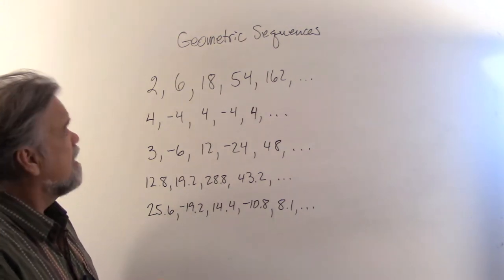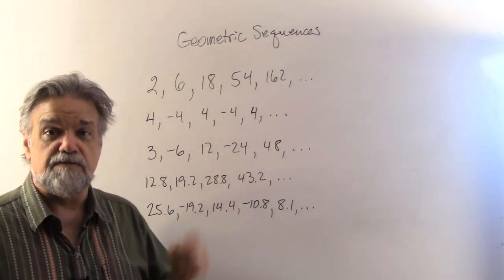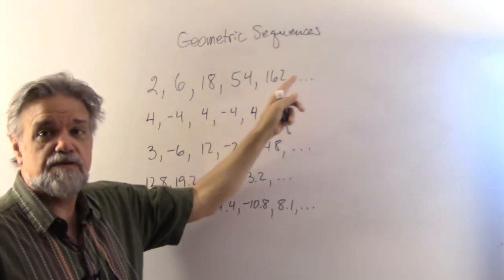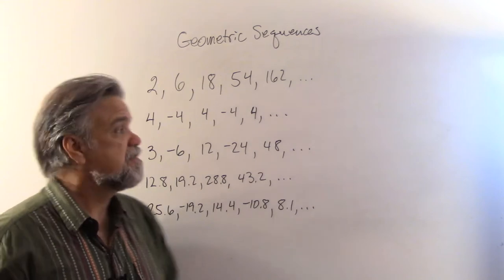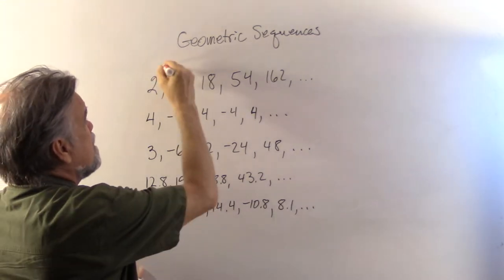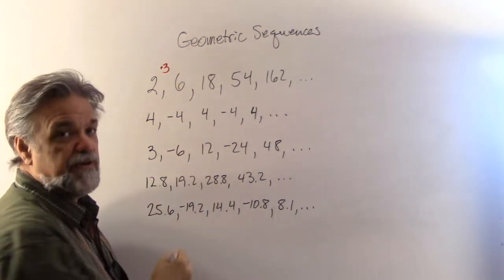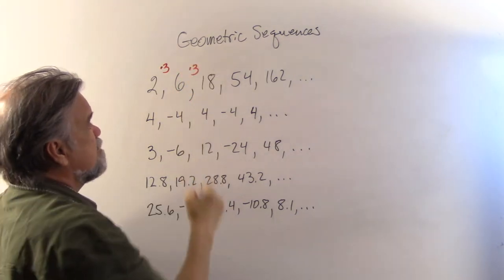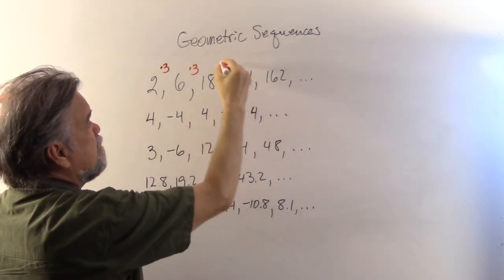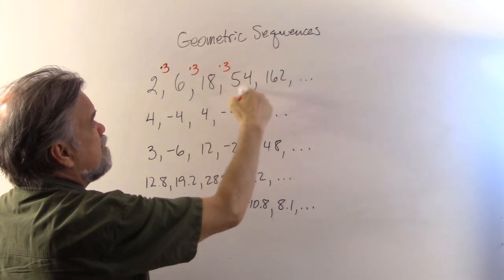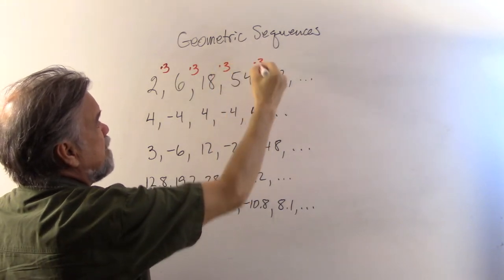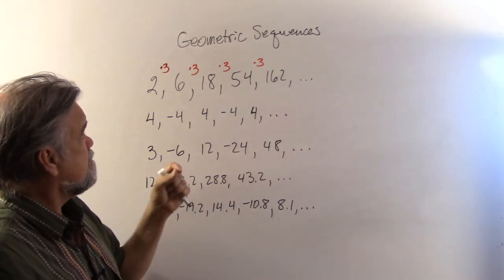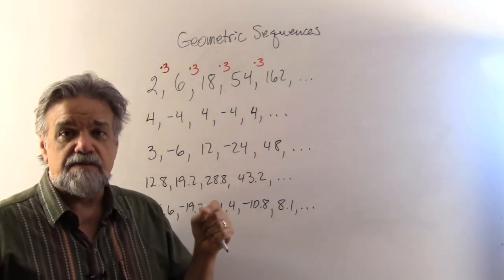Let me give some examples of geometric sequences. Look at the first one: 2, 6, 18, 54, 162, etc. I can tell this is a geometric sequence because to go from 2 to 6 I'm multiplying by 3, from 6 to 18 multiplying by 3, and from 18 to 54 multiplying by 3.